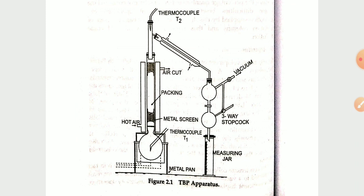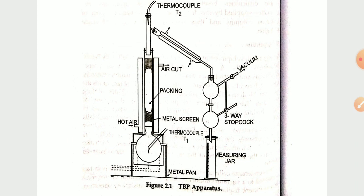The first component is the metal pan, the second one is the thermocouple, then the hot air and metal screen. Some packing, and the air inlet and air outlet section part for a thermocouple.